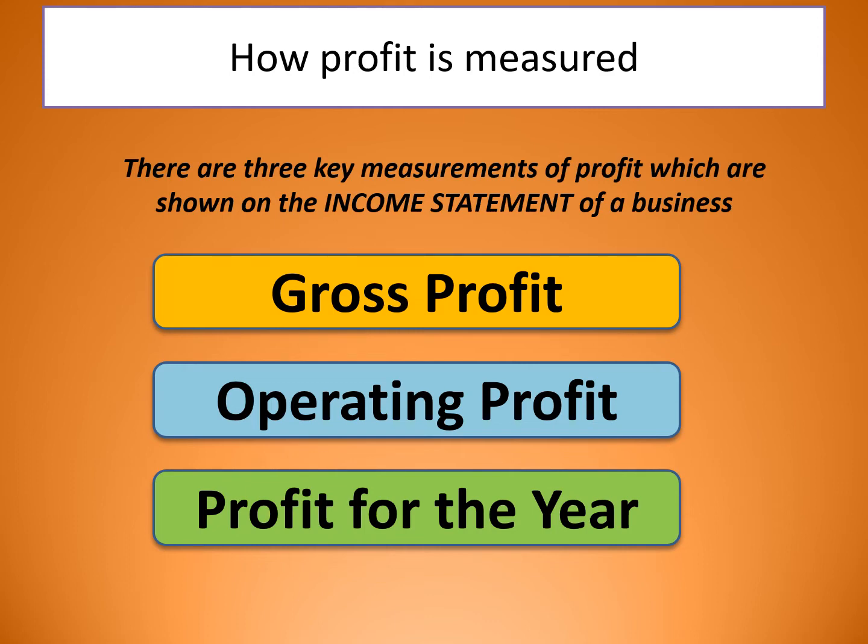So how is profit measured? There are three ways we actually look at it: we've got gross profit, operating profit, and profit for the year.